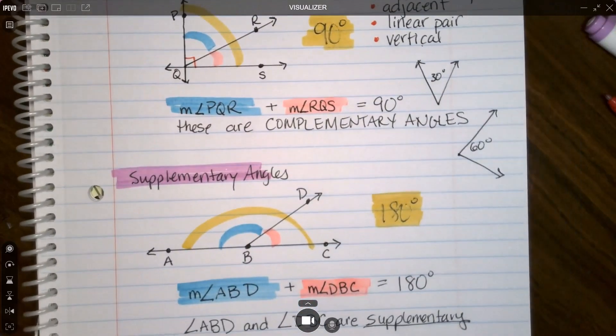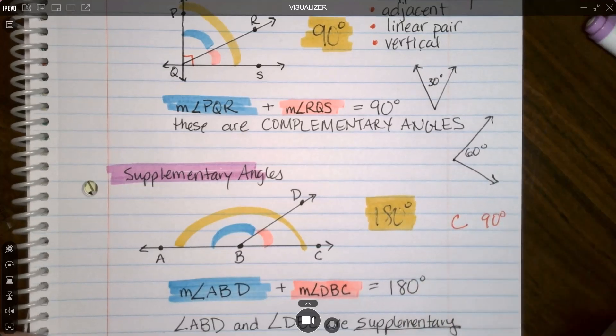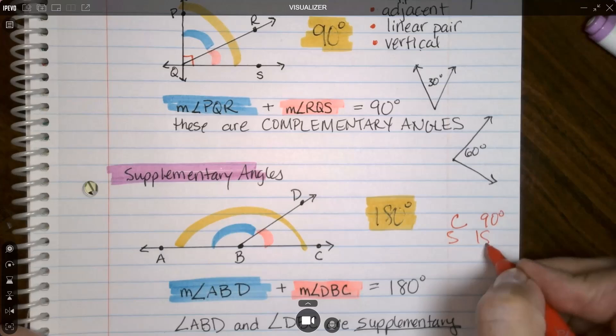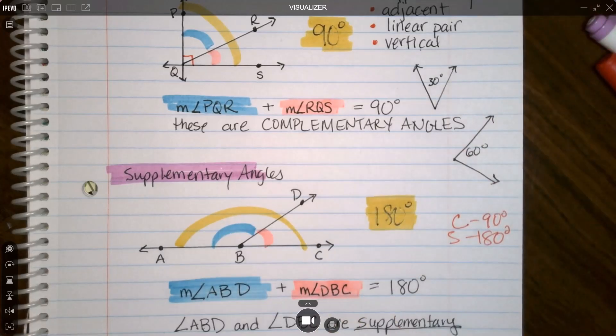People do get these confused, and you do need to memorize them. C to S, put them in alphabetical order, 90, 180, put them in numerical order, and they match up that way. A visual of what I just said is C 90 degrees, S 180. That's how I memorized them and that's how my students in class memorized it.